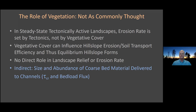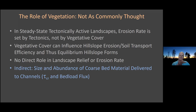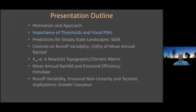We shouldn't expect the Langbein and Shum type of relationship to emerge — there's just no reason for that in steady-state tectonically active landscapes. We can expect indirect roles: affecting the size and abundance of coarse material getting into channels, including both the sediment flux and the critical stress to get that bed cleared to do any erosion. So we can expect an indirect role basically from weathering, which is tied in with temperature and vegetation.